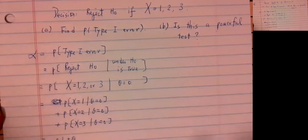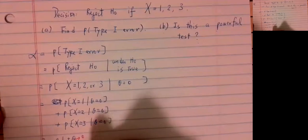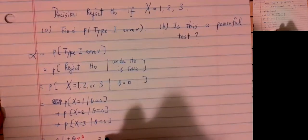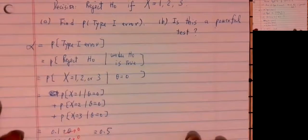Theta equals 0, so the probability is 0.1 plus 0.2 plus 0.2, which adds up to 0.5. So alpha, the probability of making a type 1 error, is 0.5.